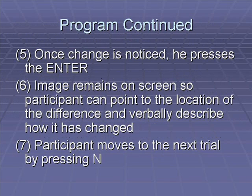Once the participant noticed a change in the two pictures, they pressed enter. The image would then remain on the screen so that the participant could point to the location of the difference and verbally describe how it was changed. The participant would then move on to the next trial by pressing the N key.